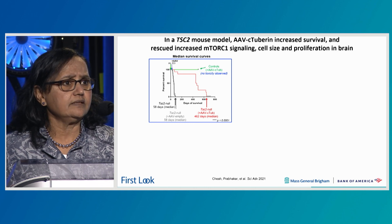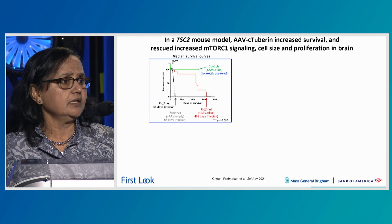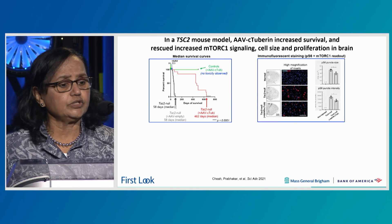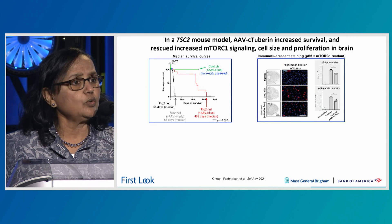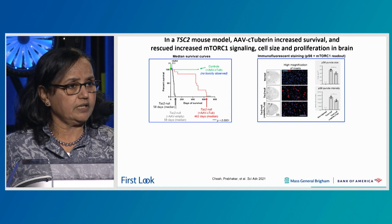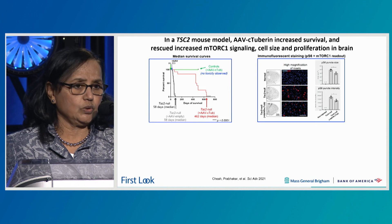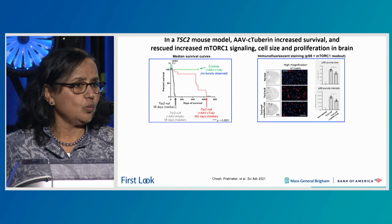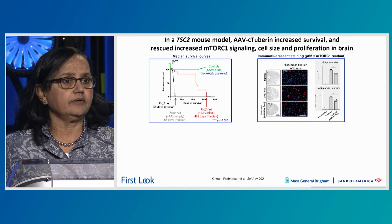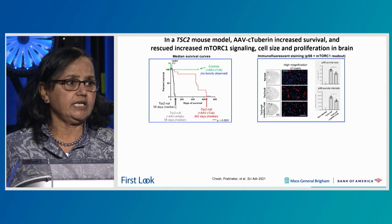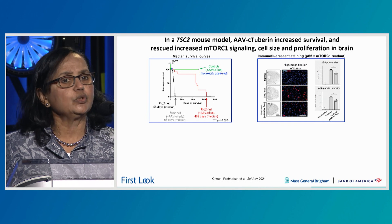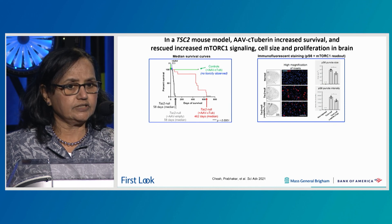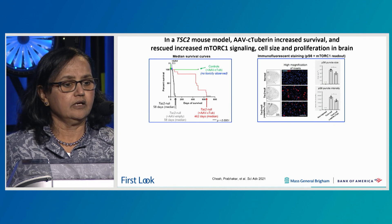When AAV C-tuberin is given to wild type animals, they are perfectly fine, suggesting there is no toxicity. We further looked at brain sections of these animals for readout of mTORC1 signaling — specifically phosphorylation of S6, a key molecule downstream of mTORC1. Compared to wild type in the top panel, the middle panel shows increased phospho-S6 staining and increased neuron size. When you give back C-tuberin, cell size is reduced, phospho-S6 staining is reduced, as quantitated on the right side.